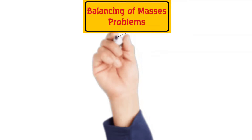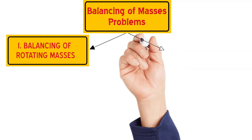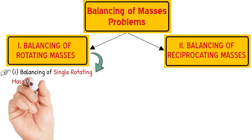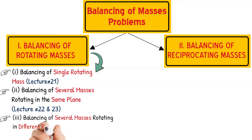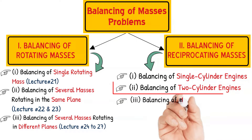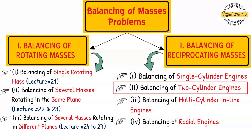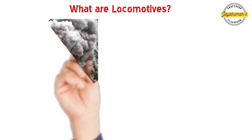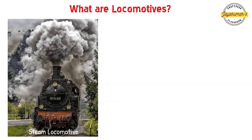This chart presents an overview of various types of balancing of masses problems. We have already covered all types of problems under balancing of rotating masses. In this class, we are going to talk about introduction concepts related to balancing of two-cylinder locomotive engines.